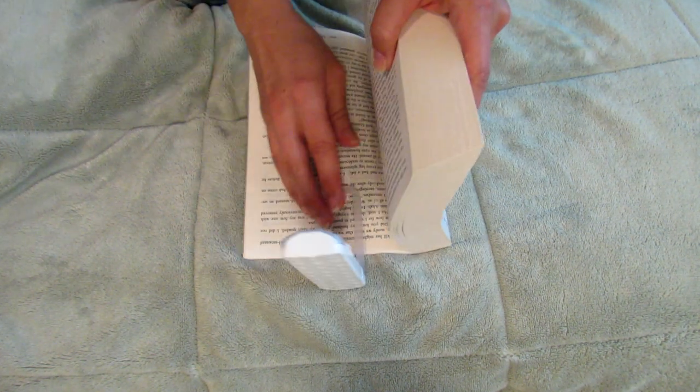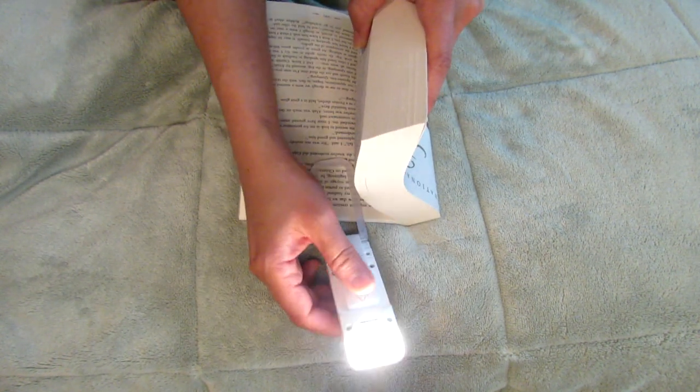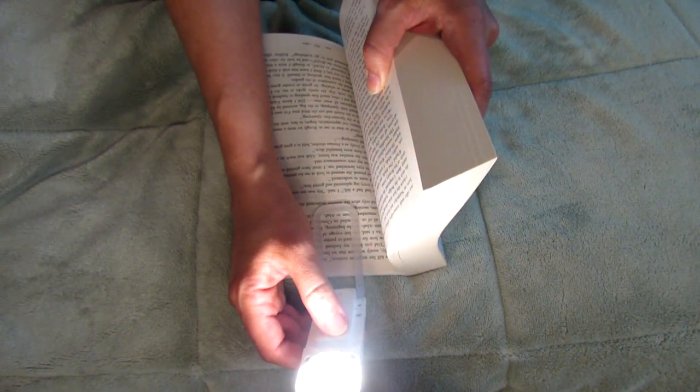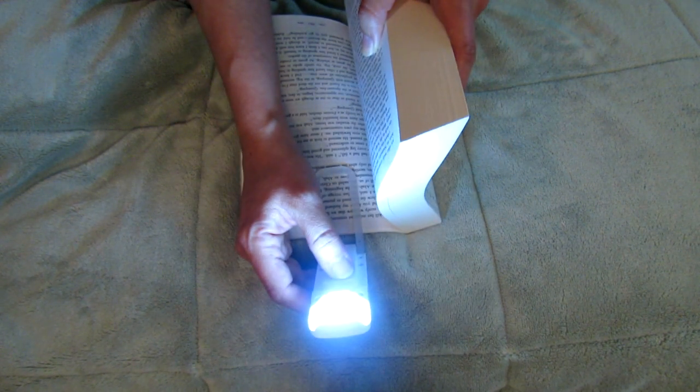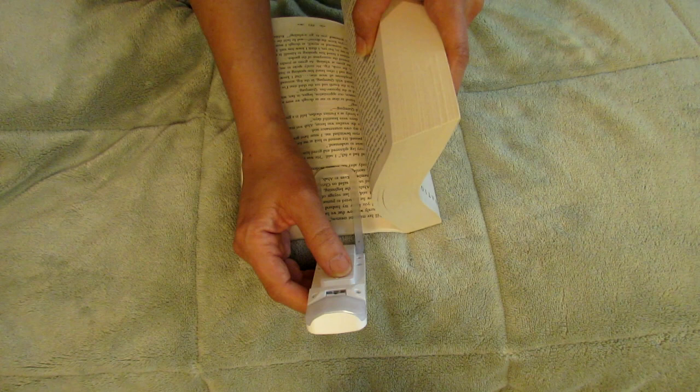And then it has this one button here that turns it on and then it changes to different - there's a cool light, there's a warm light and then it's off again. So it's like different color temperatures.